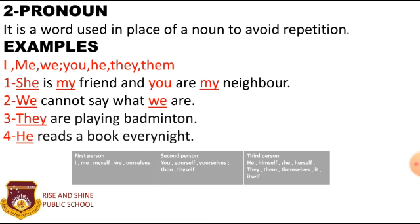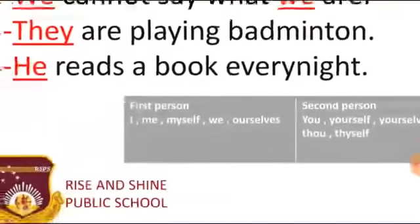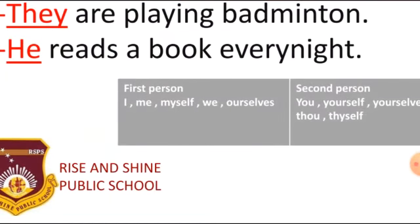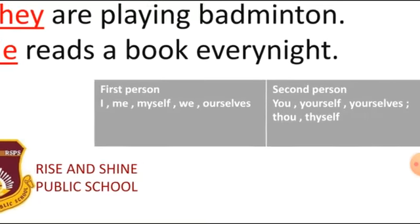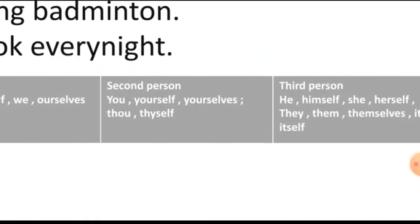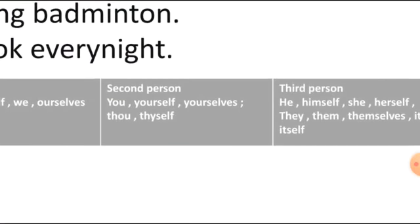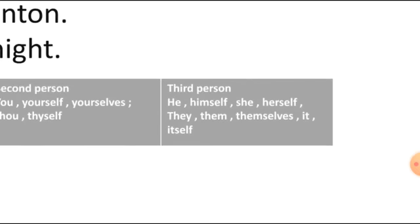So: I, me, myself, we, ourselves are first persons. You, yourself are second persons. He, himself, she, herself, they, them, themselves, it, itself are third persons.